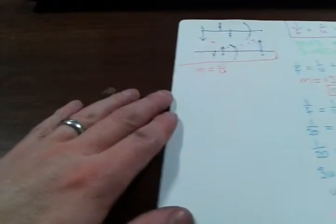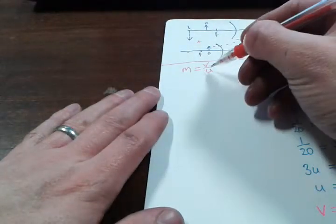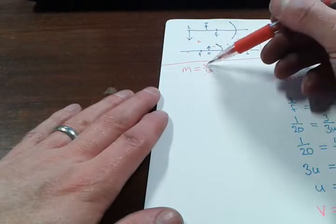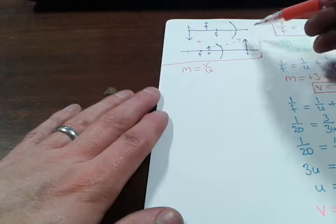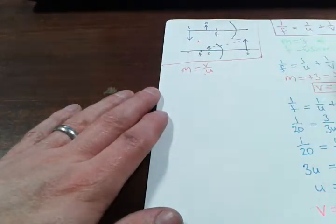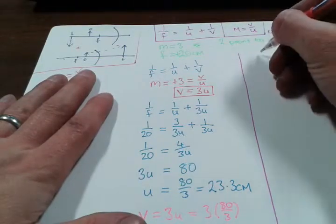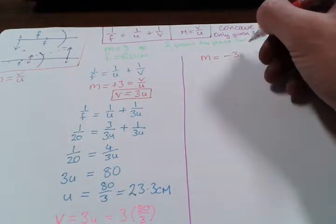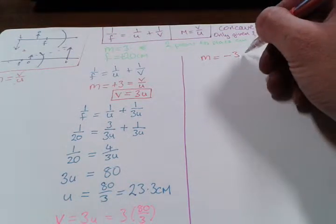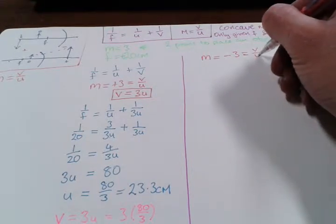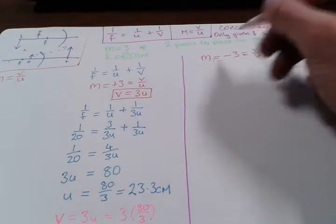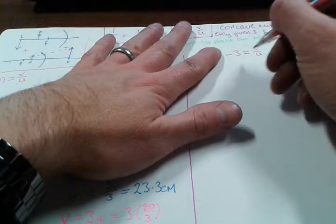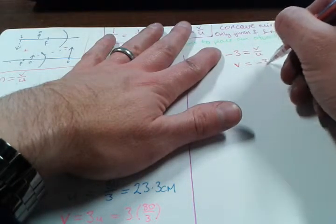Let's look at the virtual case. In the virtual case, U will be positive because the object must be on the reflective side of the mirror, but V will end up negative because the image is behind the mirror. So overall, the magnification will actually have a negative value. M equals minus 3 in this case, because it's virtual. So M equals minus 3 equals V over U. Multiplying across by U gives V equals minus 3U.